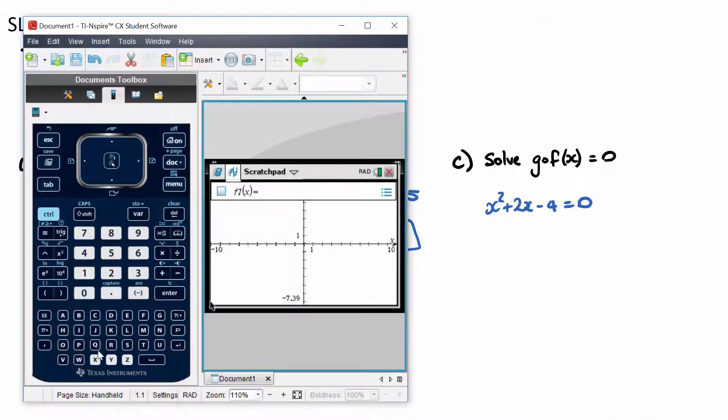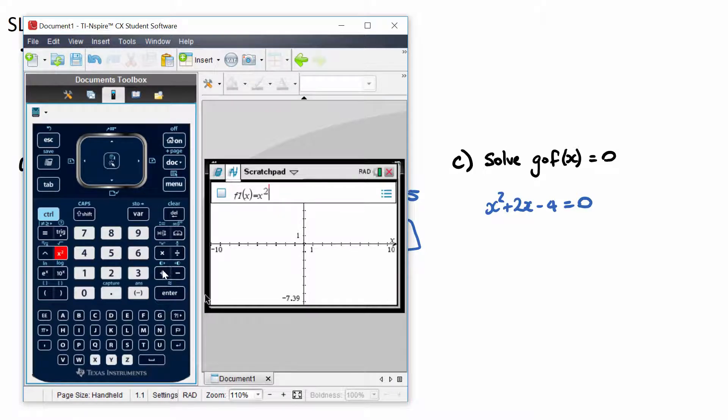I'm going to type in our function. So x² + 2x - 4, and when does this function equal 0? Now equaling 0 just means when there's an intercept with the x-axis here.